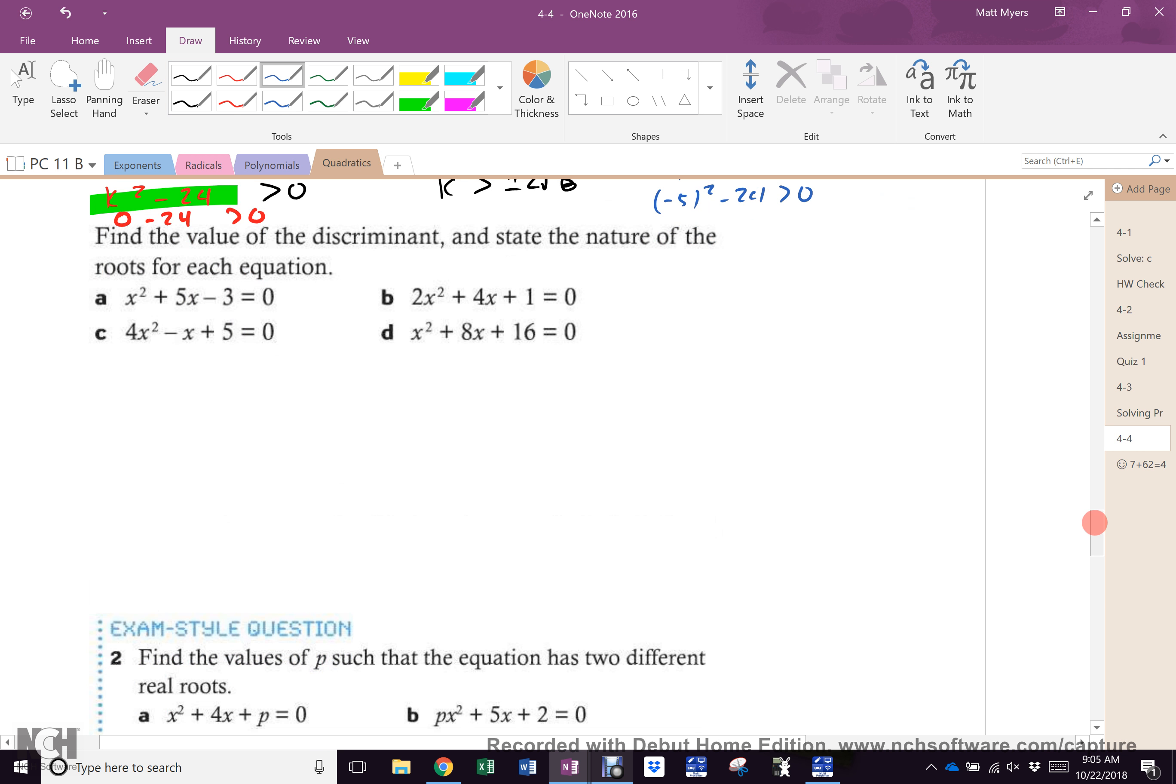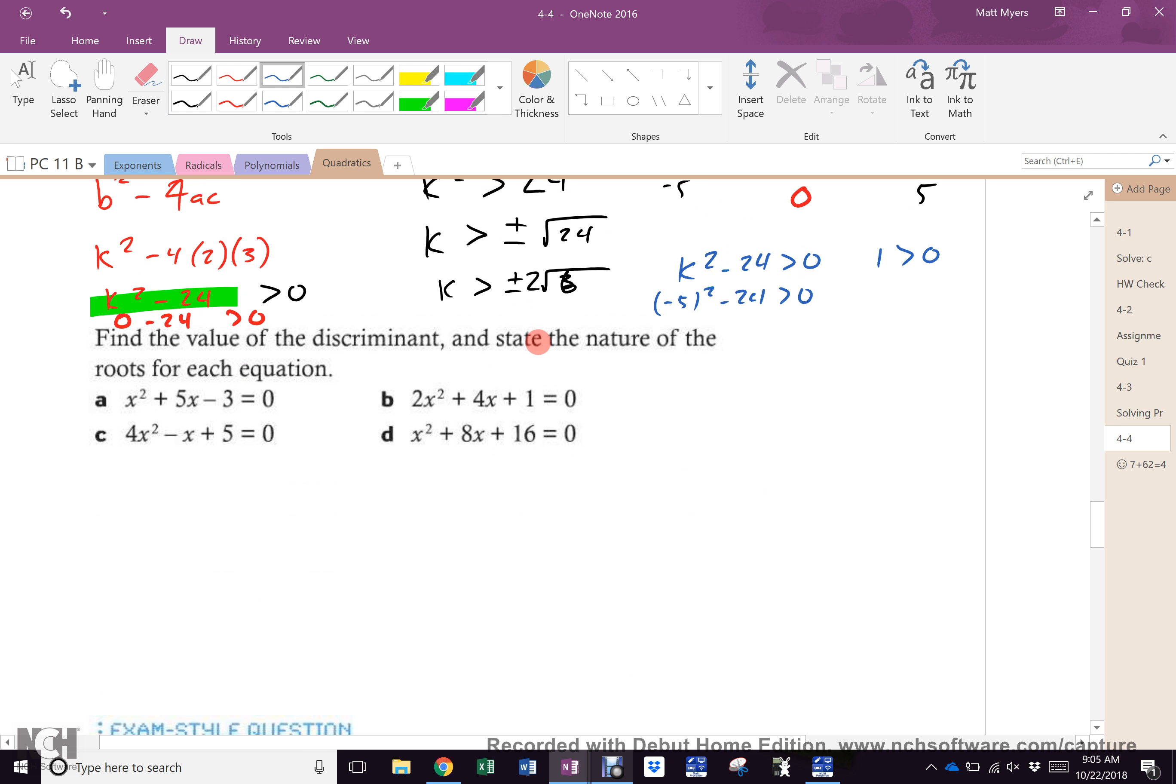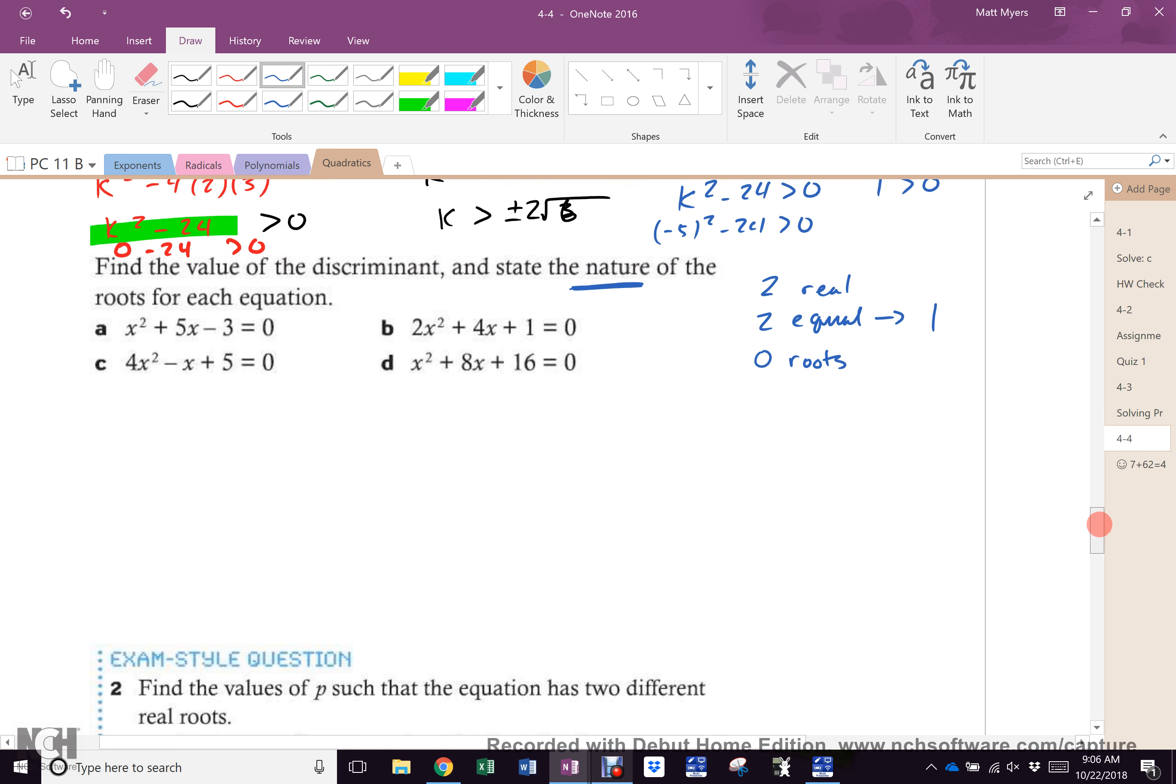Here's what I want you to do for these four questions. I want you to state the nature of the roots. Just, what are your three choices? Just the nature of the roots. There can be how many roots? Two real. Two equal. Which, what does that look like in real life? One. Or? Zero roots. I want to know that. I want to know what those are. And then, no, I don't even want you to do that. Just tell me the roots. Go.